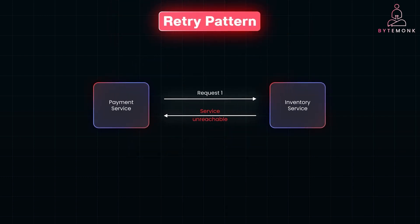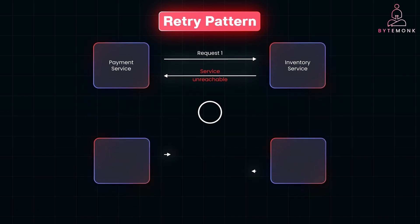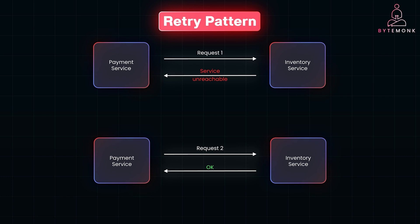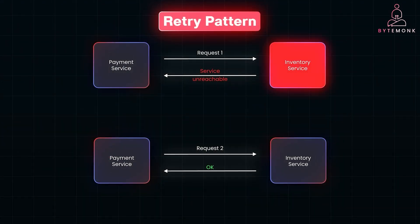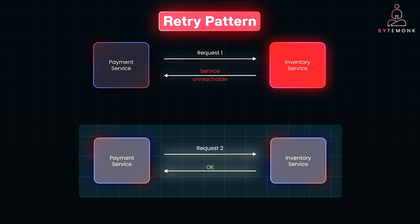Next up is the retry pattern. Not all failures are permanent — sometimes they are caused by a temporary issue like network latency. The retry pattern automatically retries a failed request after a short delay. But instead of retrying immediately and overwhelming the service, we use something called exponential backoff, which means waiting longer between each retry. For example, if your inventory service fails due to a brief network issue, the retry mechanism will kick in, waiting a little longer after each failure before trying again, giving the system time to recover without adding more pressure.